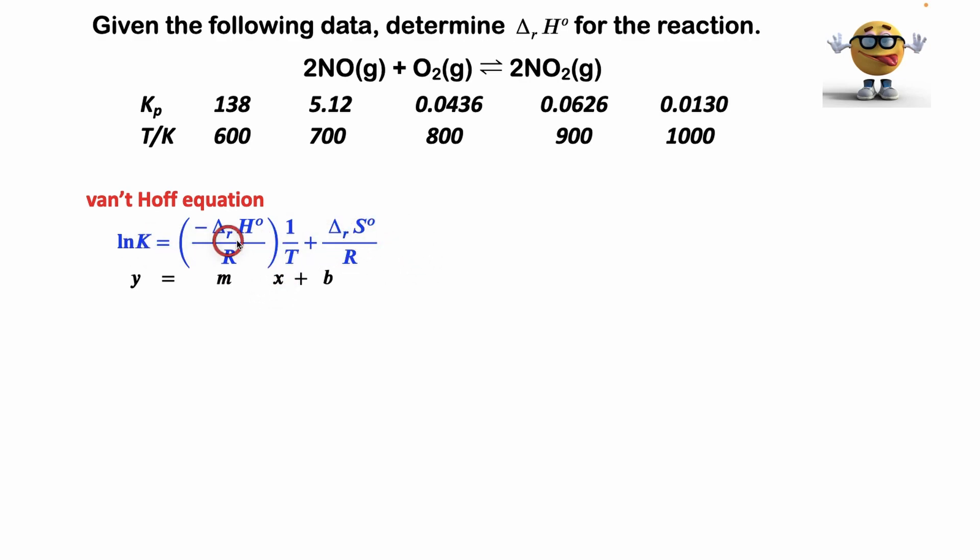If we plot ln K versus 1 over T, we'd expect a straight line if it behaves according to the van't Hoff equation. I plotted these values in Excel - took ln of K for each of these, then 1 divided by T, and plotted that. And indeed, it was a straight line.